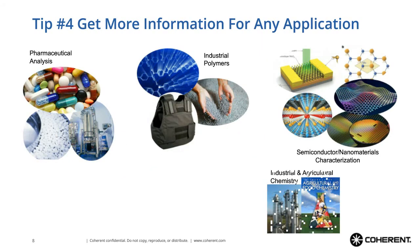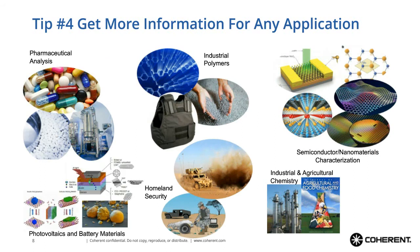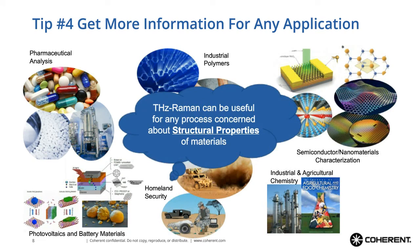Tip number four is that you can get more information for virtually any application by incorporating terahertz Raman. These are just some of the many demonstrated applications. The common element is the desire to learn more about the structural properties of materials — from polymorphs to structural integrity and defects, electrical properties, quality assurance, or forensic analysis. Any application concerned about structural properties of materials and how they might change could take advantage of terahertz Raman capability.